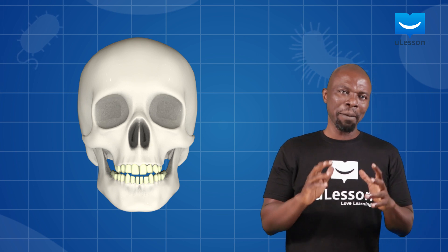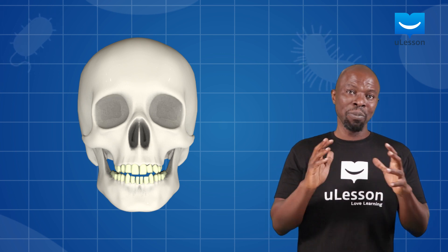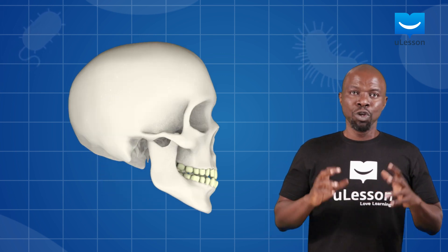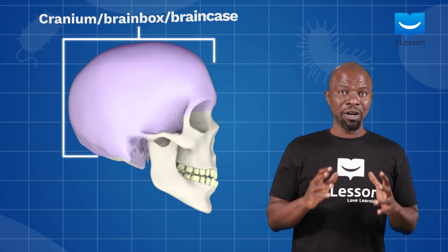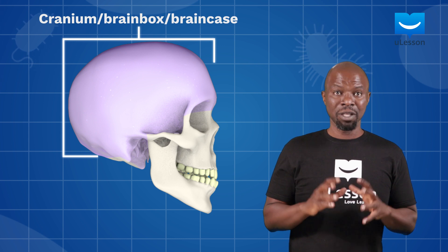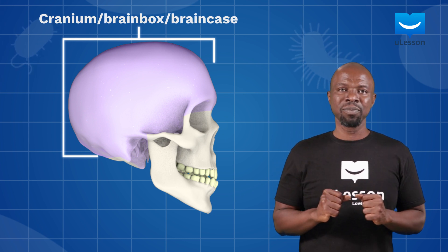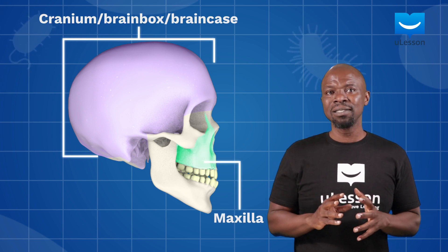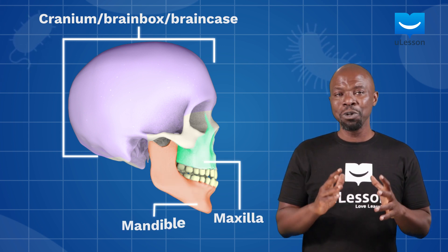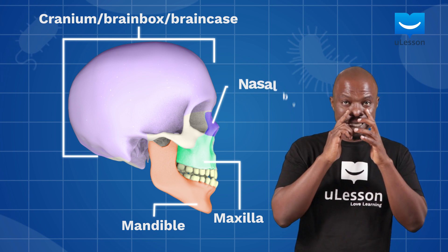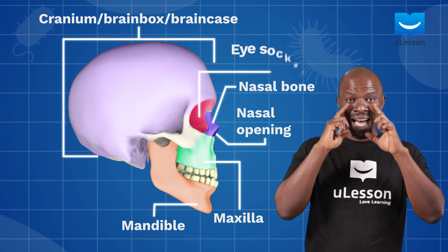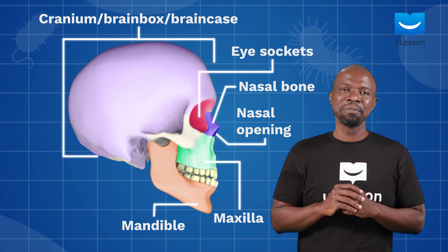Let's take a step back and look at the human skull. You can see the big cranium — the brain box. You can see the maxilla, mandible, nasal bone, nasal opening, and the eye sockets.